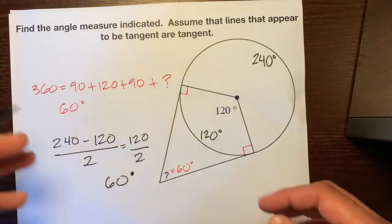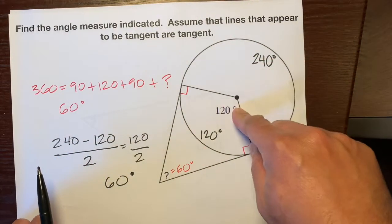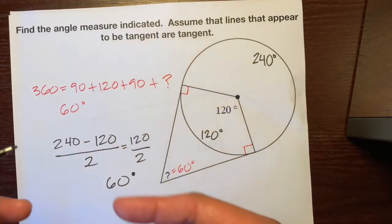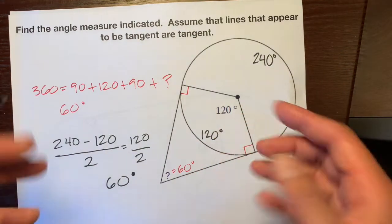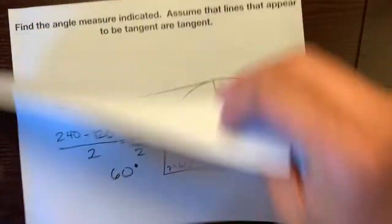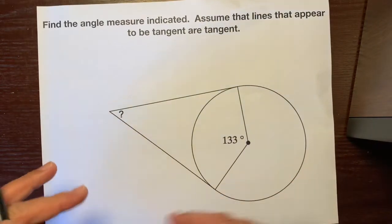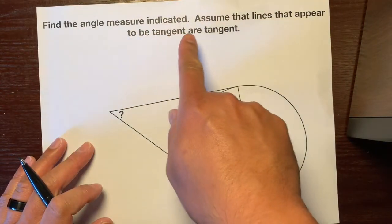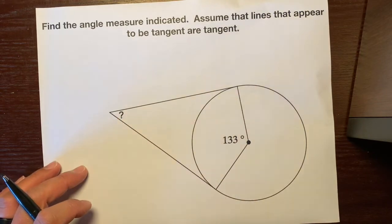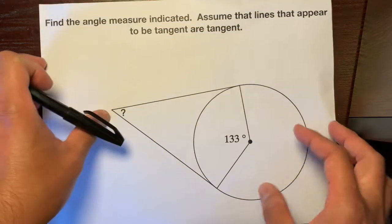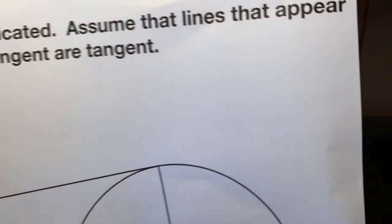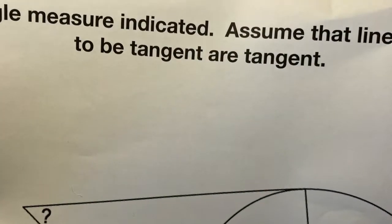So you can't just take this angle and divide it by 2 because it doesn't always work. So here's another example to prove that to you. So here it is, same instructions. Find the angle measure indicated.